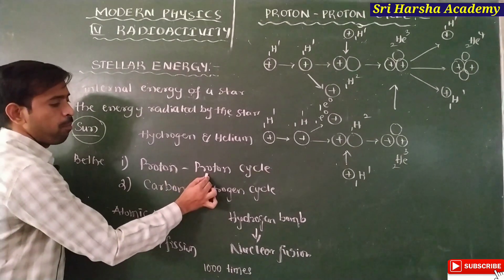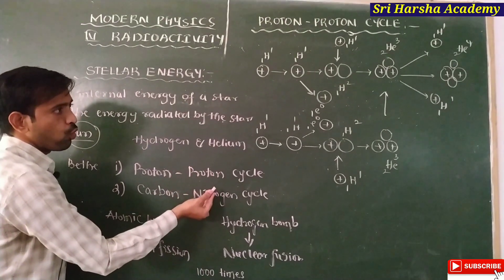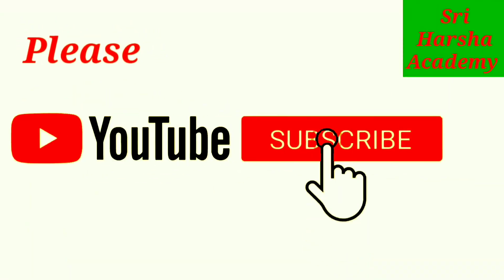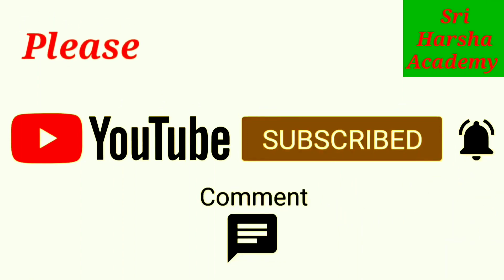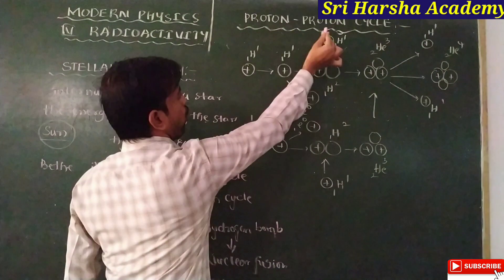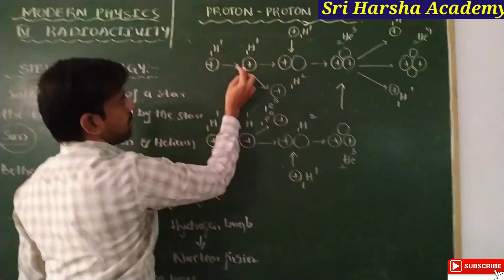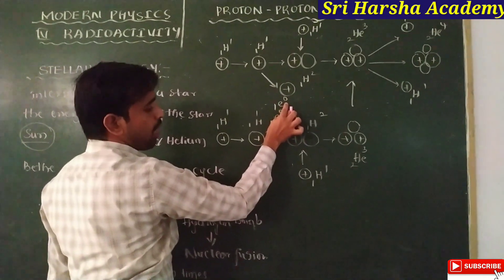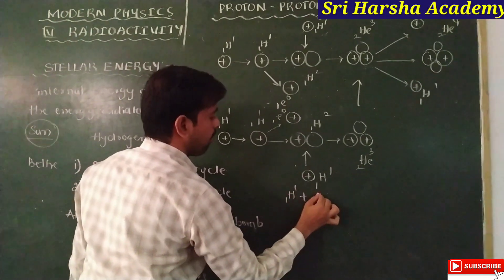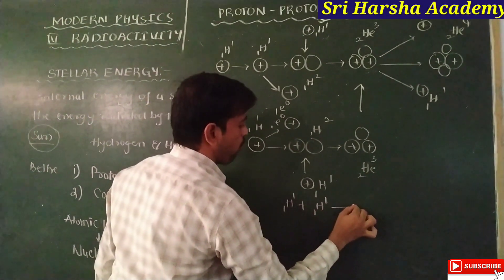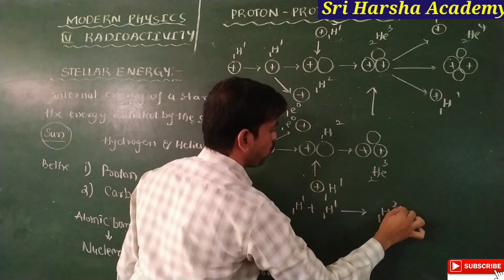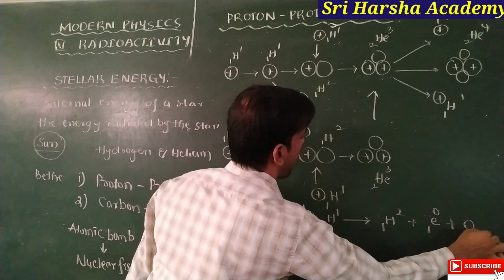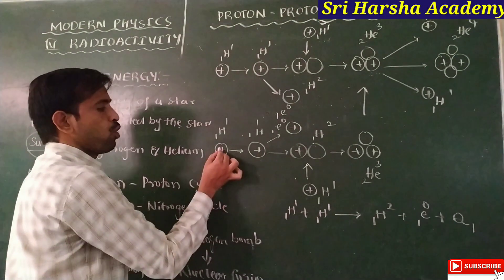Now I want to explain the proton-proton cycle. With the help of this cycle, we want to emit helium-2,4 particles. In this proton-proton cycle, two hydrogen particles combine together to produce a deuterium particle as well as emit a positron. So: H-1,1 plus H-1,1 gives rise to deuterium H-1,2, as well as a positron e-1,0 and some amount of energy Q1.